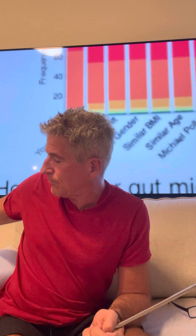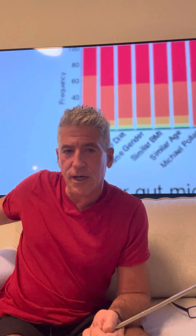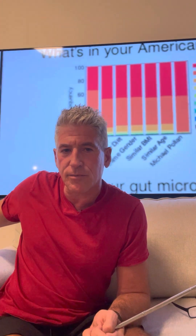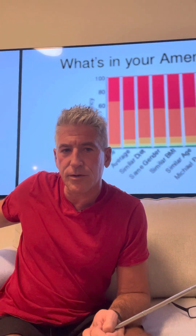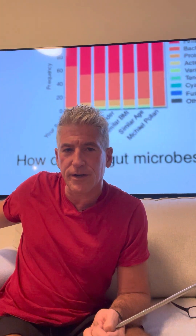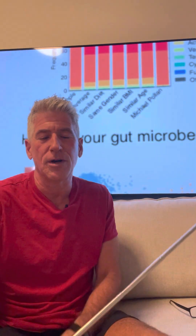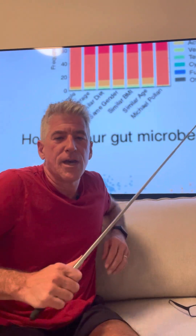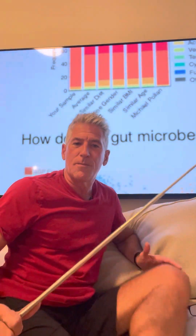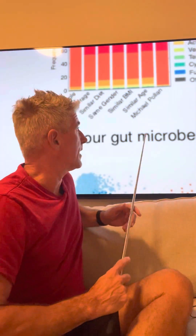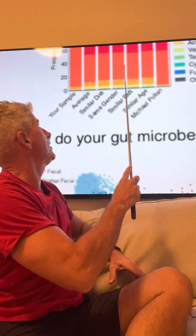This is called the American Gut Project — you can just Google it and find it. When they go back to offering the service, you may be able to look into it. The red in the chart represents Firmicutes and the orange is Bacteroides, so you can get an idea from your particular sample.